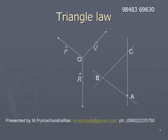Another way of representing the triangle law: if we draw parallel vectors to p bar, q bar, and r bar, and thereby triangle ABC is formed, then small p, small q, small r are the side lengths — small p is the length of AB, small q is the length of BC, and small r is the length of CA.